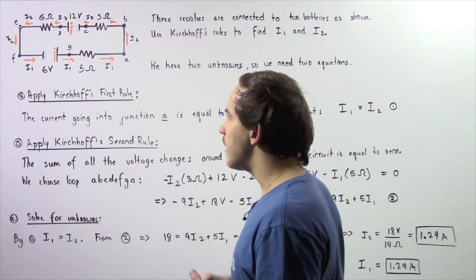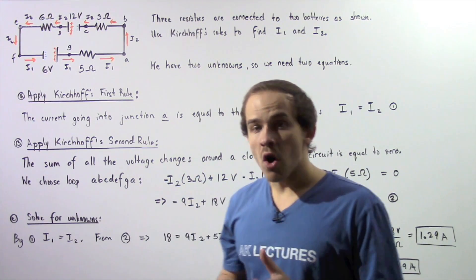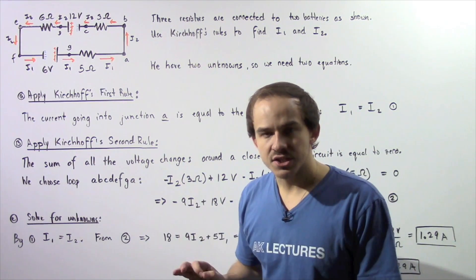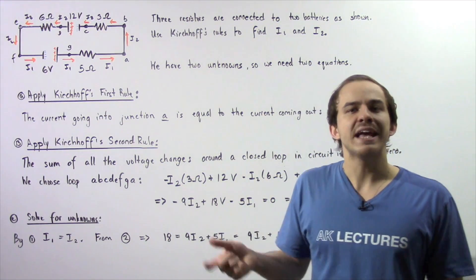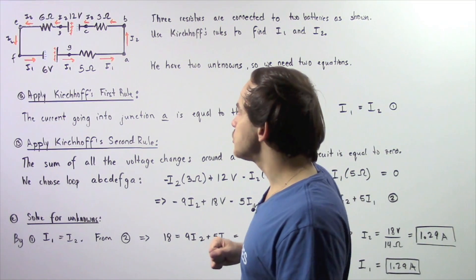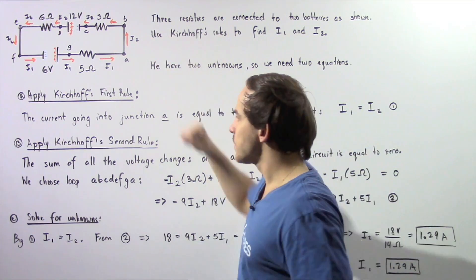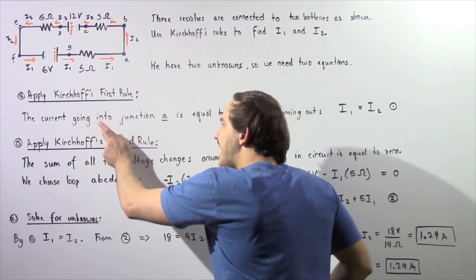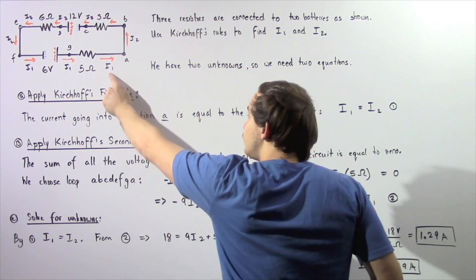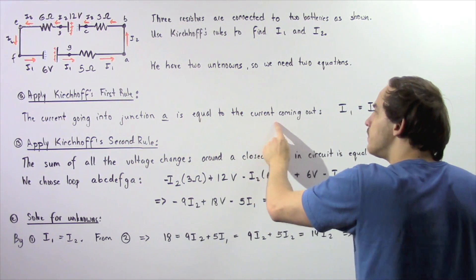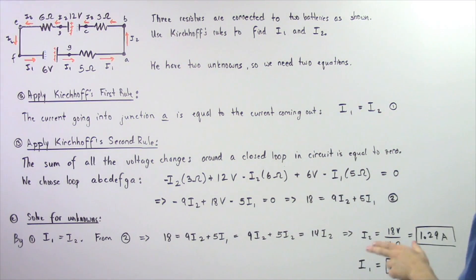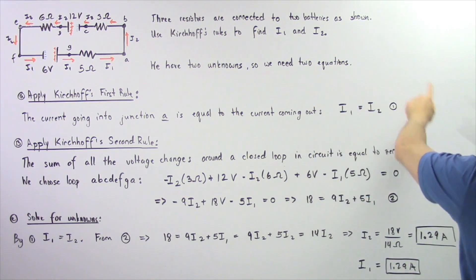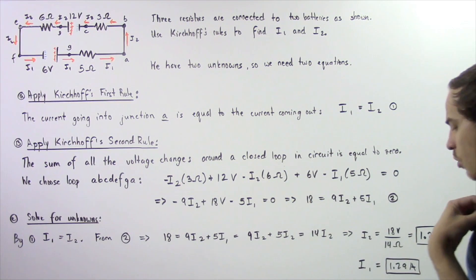Let's begin with Kirchhoff's first rule, which tells us that the current going into a junction is equal to the current coming out of that junction. Choosing junction A, the current going into junction A, which is I1, is equal to the current coming out of junction A, which is I2. So by Kirchhoff's first rule, I1 equals I2 — this is Equation 1.